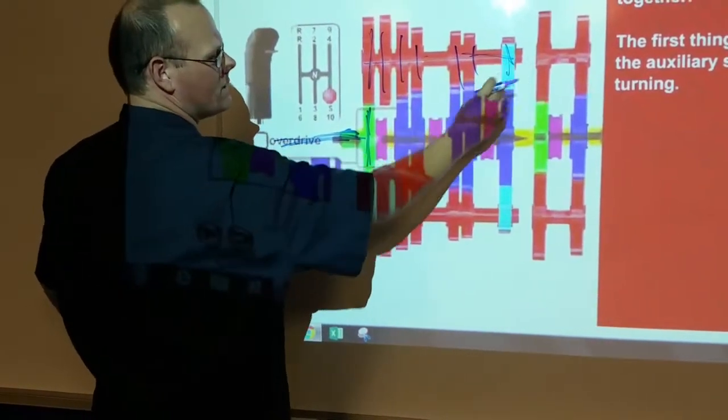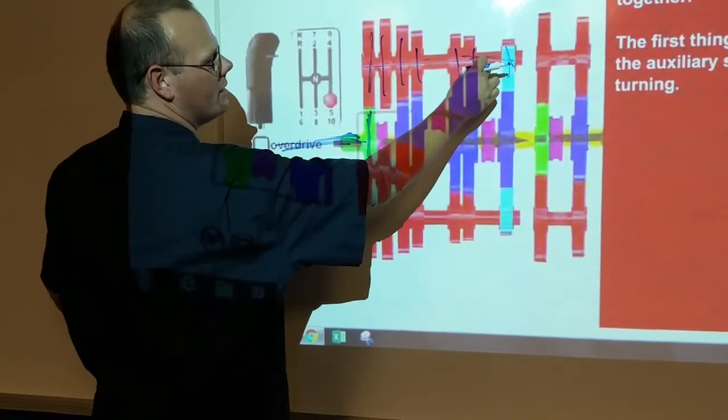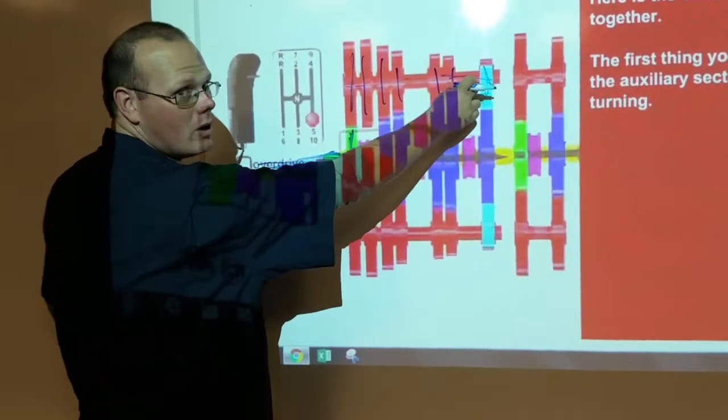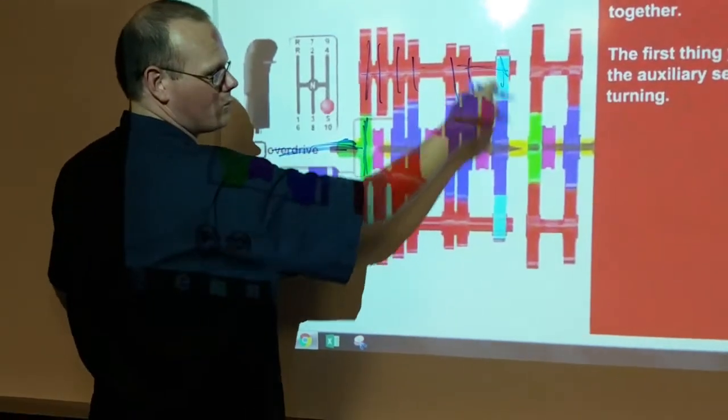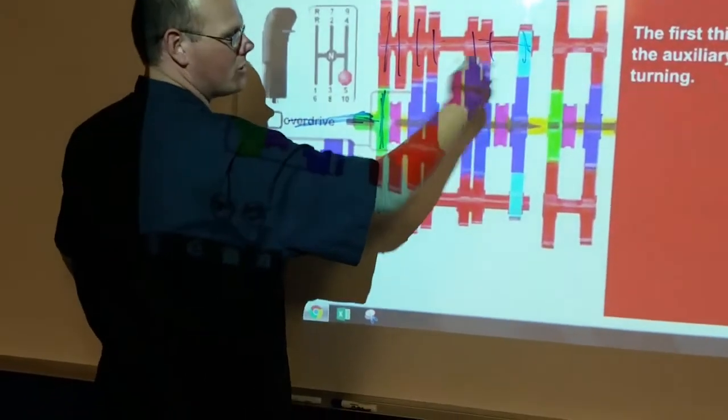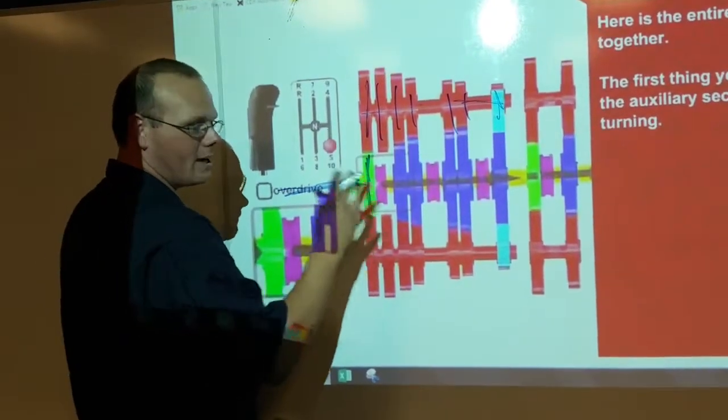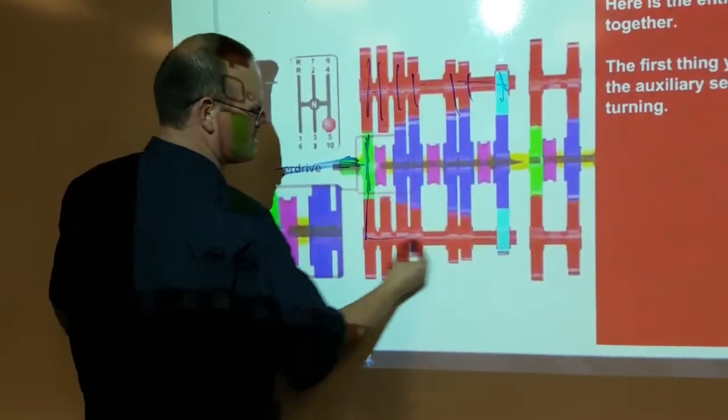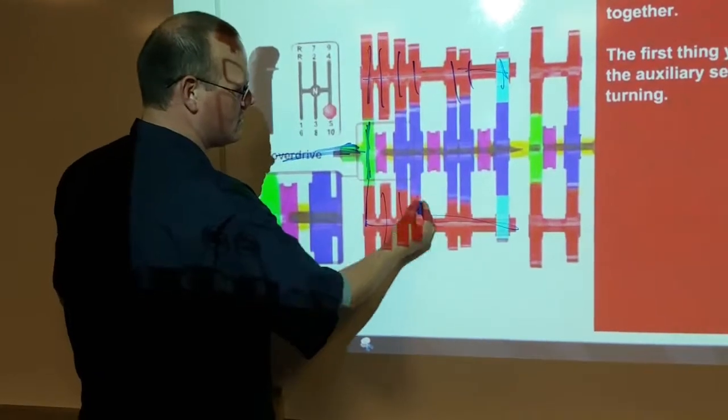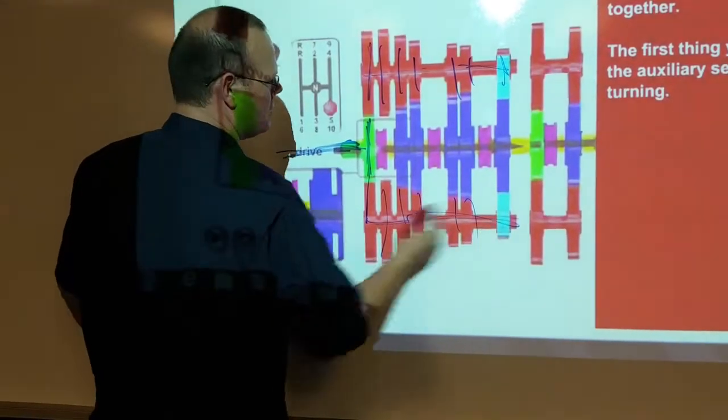This blue piece right here is an idler on top of the counter shaft, which allows the reverse gear to rotate the other direction. We'll talk about that here in a little bit. So if you look, unlike an automotive transmission, this actually has two counter shafts.